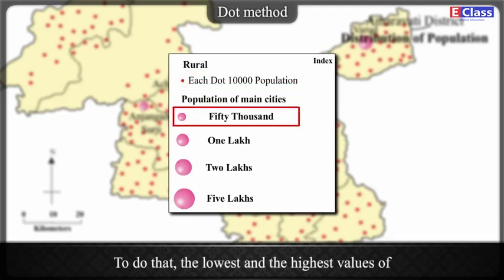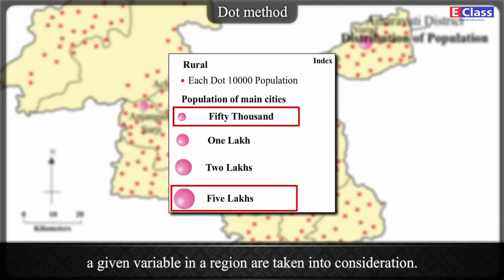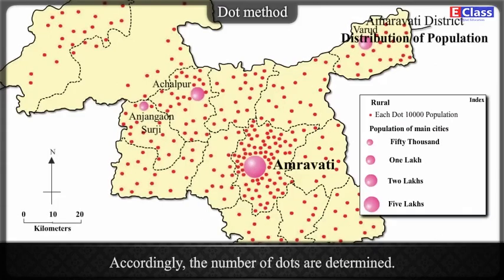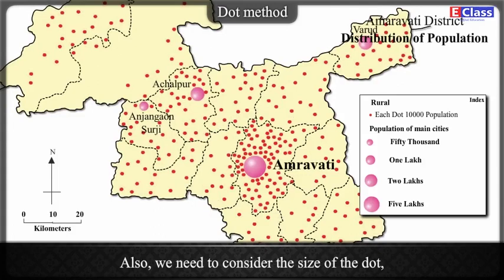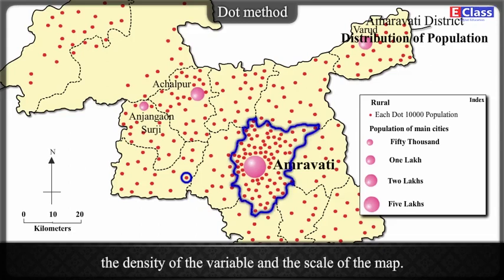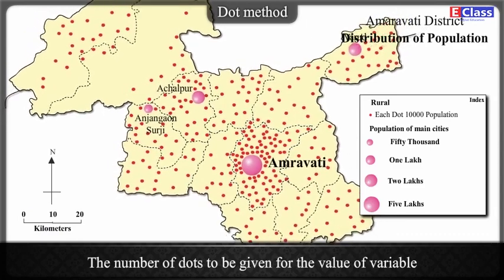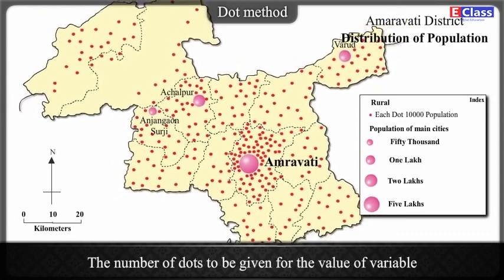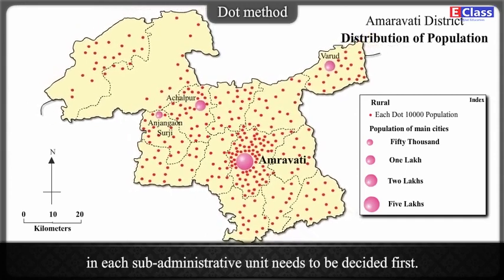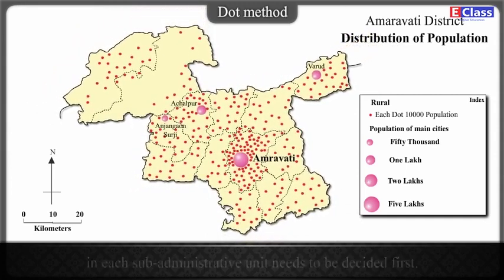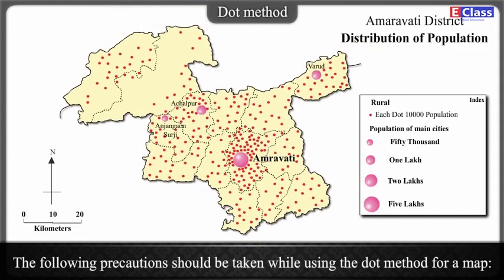To determine dot value, the lowest and the highest values of a given variable in a region are taken into consideration. Accordingly, the number of dots are determined. We also need to consider the size of the dot, the density of the variable, and the scale of the map. The number of dots to be given for the value of a variable in each sub-administrative unit needs to be decided first. The following precautions should be taken while using the dot method.